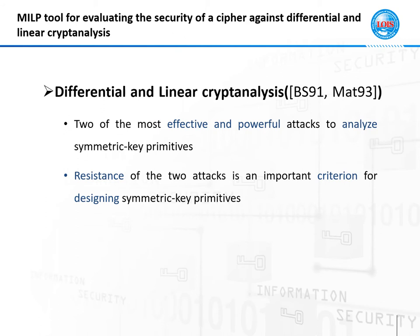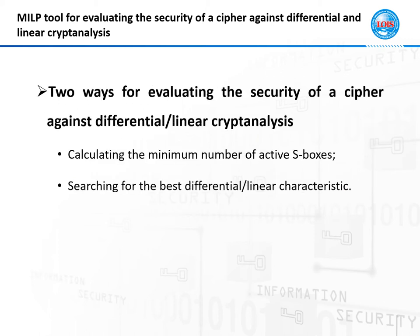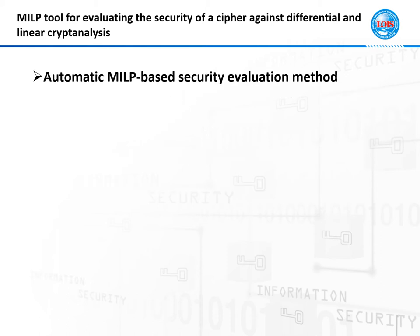Differential and linear cryptanalysis are two of the most effective and powerful attacks to analyze symmetric-key primitives. Being able to resist these two attacks is an important criterion for designing symmetric-key primitives. To evaluate the security of a cipher against differential or linear cryptanalysis, there are usually two approaches. One is to calculate the minimum number of active S-boxes, and the other is to search for the best differential or linear characteristics. In recent years, a method based on MILP has been proposed for security evaluation.